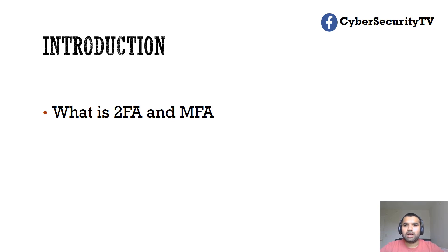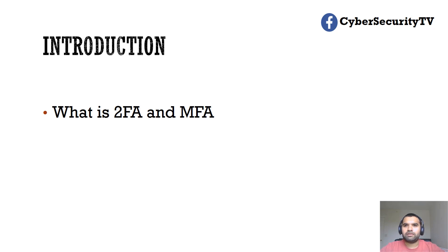What you know is a password — so you know the password, that means you are the right person. Then what you have is some sort of unique identity, either a one-time password, a security key, biometric, or something specific to you — that counts as the second factor. Multi-factor is more than two factors. For example, some applications require a username plus an LDAP or Active Directory password, plus a one-time password — that's an example of multi-factor authentication. Again, all two-FAs can be MFA, but not all MFA can be two-FA.